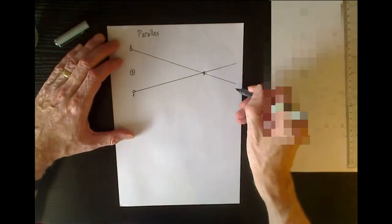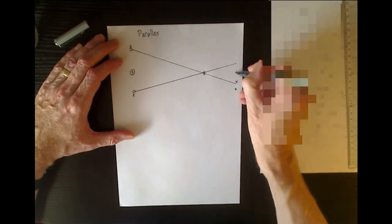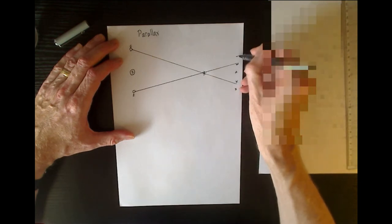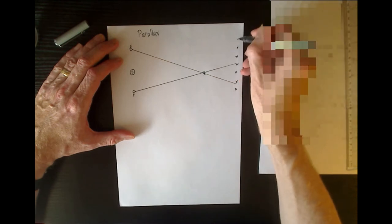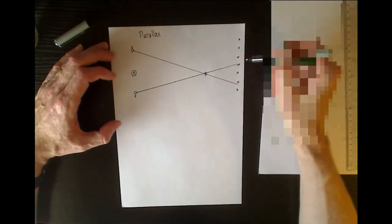How that appears is that the star then appears to shift against the background of extremely distant stars. So the nearer star will appear to shift against this so-called fixed star background.